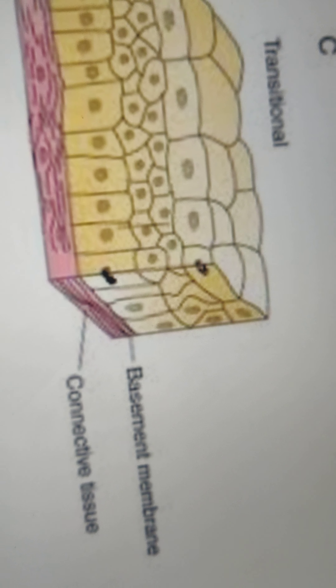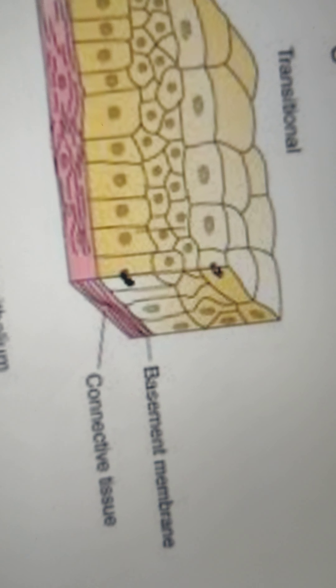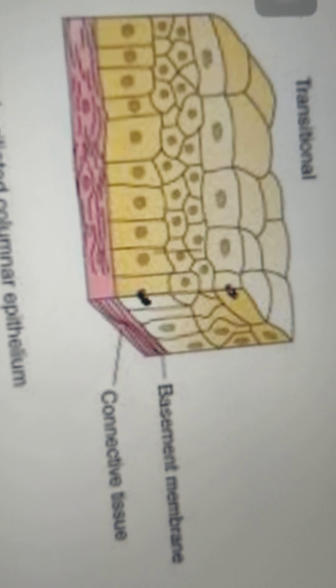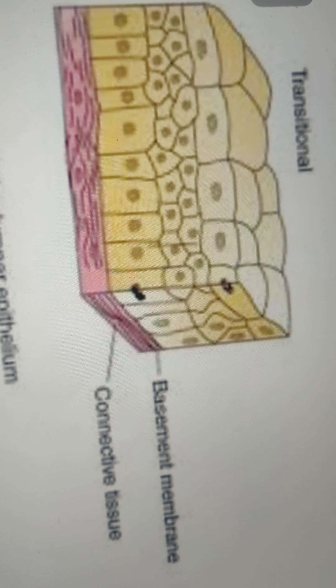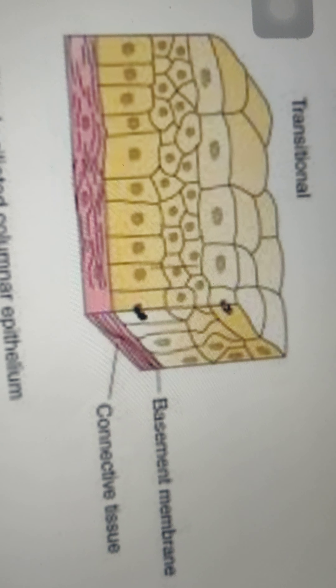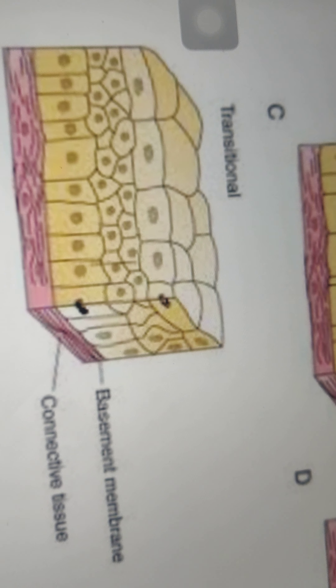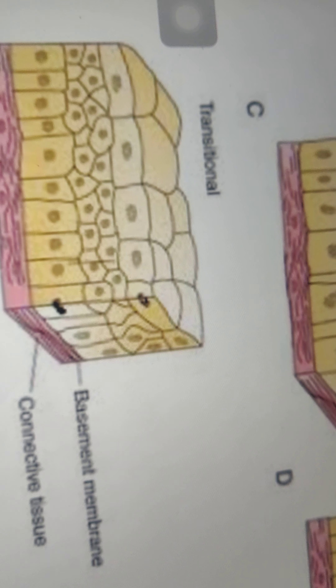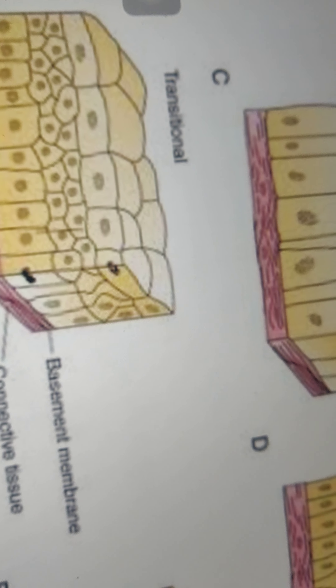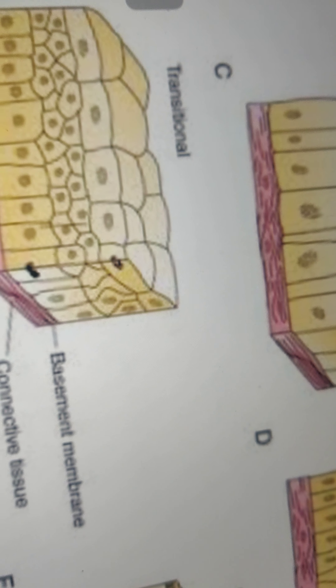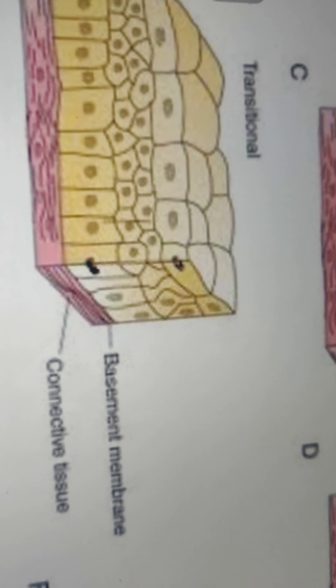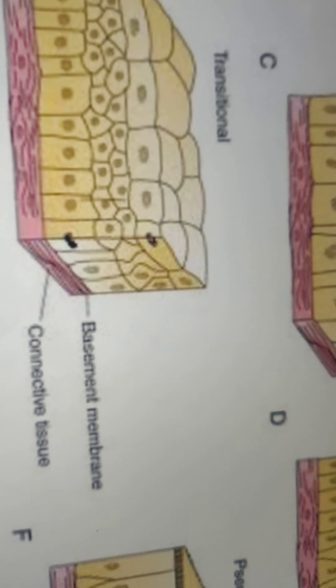Transitional epithelium is generally found lining the urinary bladder. Because the cells are pear-shaped, they allow stretching. When urine volume increases, the bladder stretches out, so this epithelium is particularly helpful there.